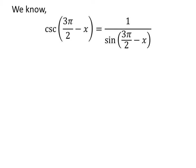As we know, cosecant of theta is equal to 1 upon sine of theta. So, cosecant of 3 times pi upon 2 minus x is equal to 1 upon sine of 3 times pi upon 2 minus x.